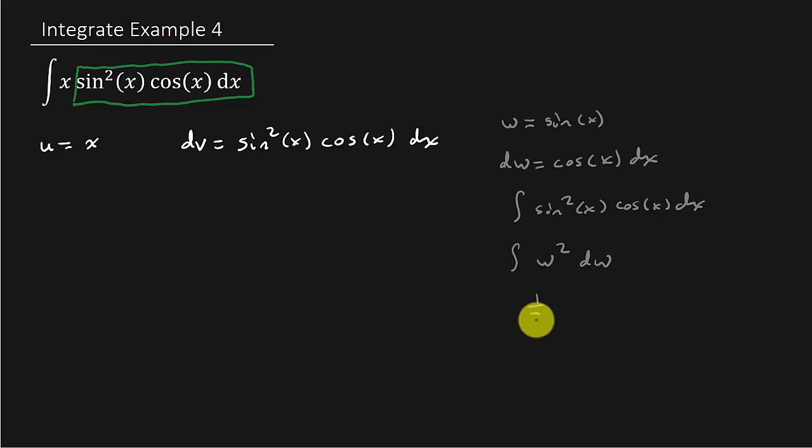And so this is going to be one-third w cubed. Alright, and so this is one-third sine cubed x. And so I get v is equal to one-third sine cubed x. And then here I get du equals dx.